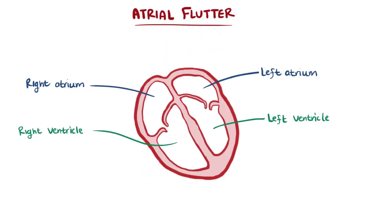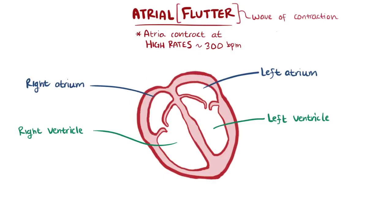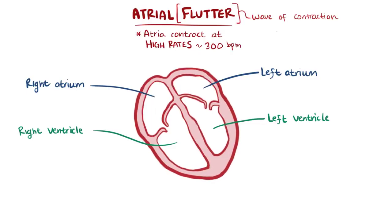Atrial flutter is used to describe when the atria contract at really high rates, about 300 beats per minute, but sometimes as high as 400 beats per minute. Why flutter? Well, there's a wave of muscle contraction that flows through the atria that looks a little like it's flapping or fluttering, hence the name.